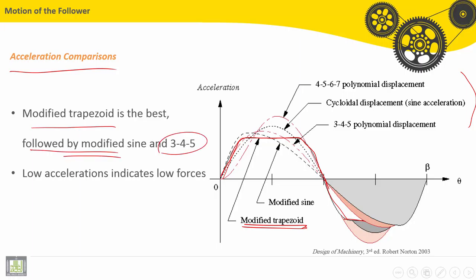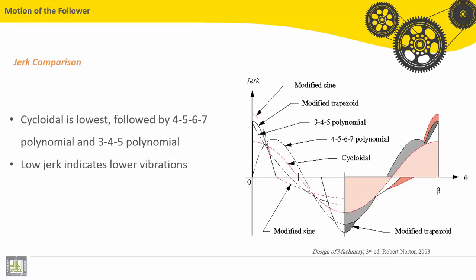Here we have the modified sine curve for acceleration, and after that the 3-4 polynomial displacement. All these provide good results for design. Low accelerations indicate low forces.